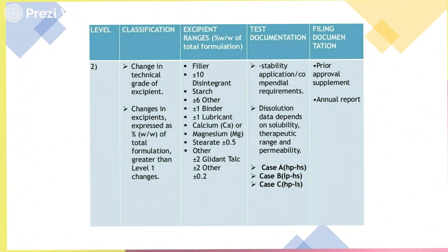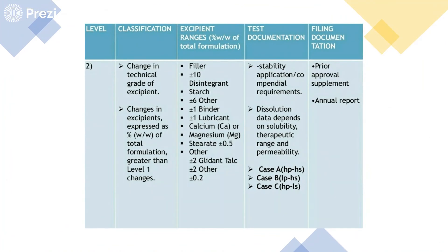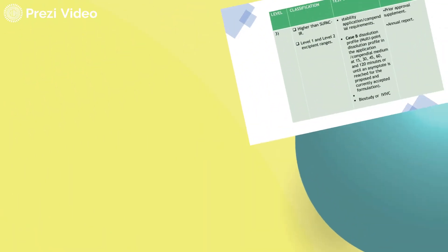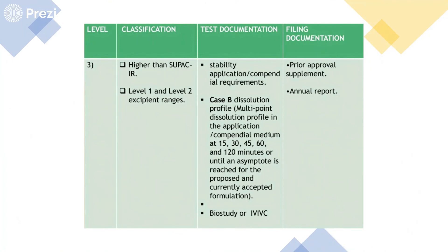Level 2 requires change in the technical grade of the excipient — for example, switching from IP grade to USP grade when IP grade is unavailable. This falls into Level 2, requiring an annual report plus prior approval from the regulatory agency for the supplement. Level 3 changes are those which will impact bioavailability. Prior approval from the agencies is required, stability testing must be conducted, multi-point dissolution studies are needed, and all data must be compiled in annual reports to the FDA.